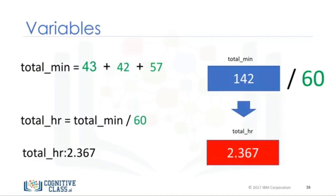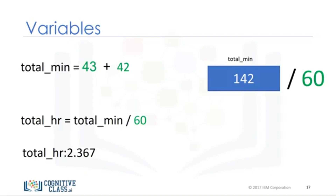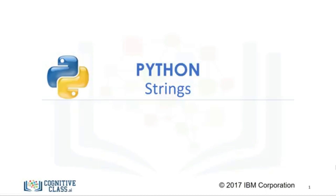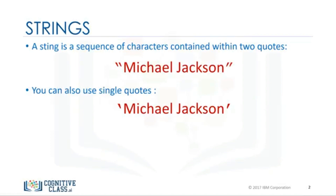If we modify the value of the first variable, the value of the variable will change. The final result values change accordingly, but we do not have to modify the rest of the code. In Python, a string is a sequence of characters. A string is contained within two quotes. You could also use single quotes. A string can be spaces or digits. A string can also be special characters.